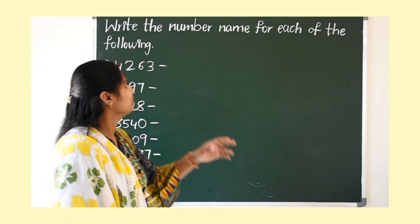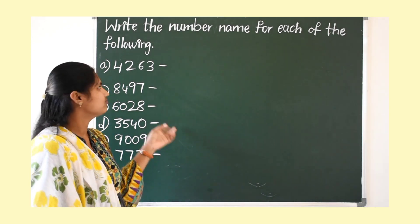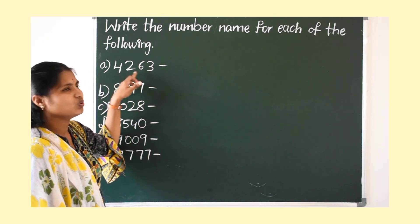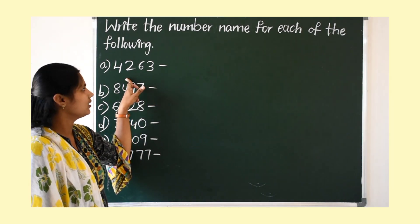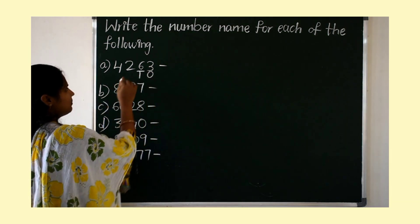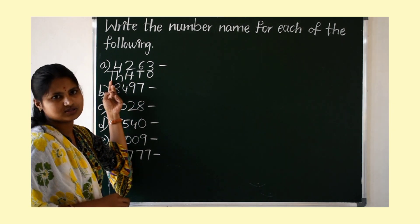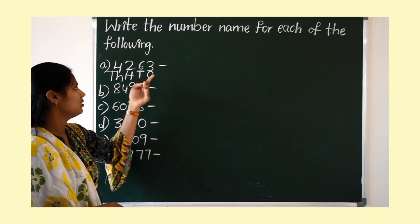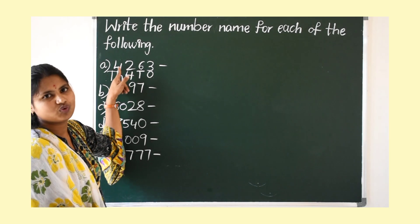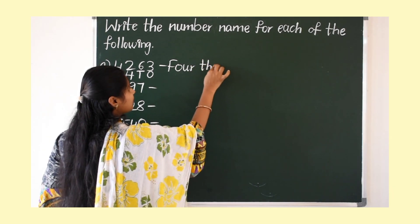Now we have one more bit: write the number name for each of the following. Till now we have written numerals, but here numerals are given and we have to write the number name. For example, 4263. Write down the place values: 1's, 10's, 100's, and 1000's. This is a 4-digit number. How many 1000's? 4000 — write 4000.